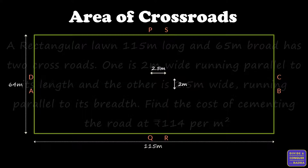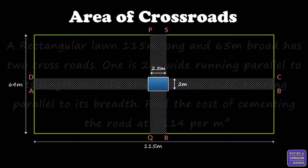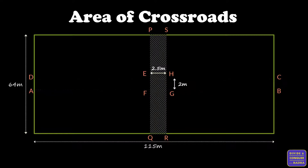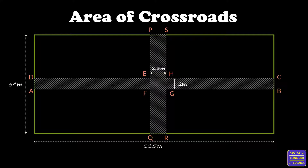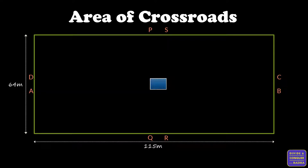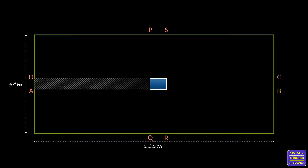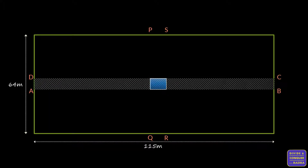When two crossroads intersect each other, there is a common area. Let's label the common area as EFGH. To calculate the area of the crossroads, we need to find the area of crossroad 1 and 2 separately and subtract the common area. This common area is the overlap portion at the point of intersection — we subtract it because it is already calculated twice when finding the areas of the roads separately.